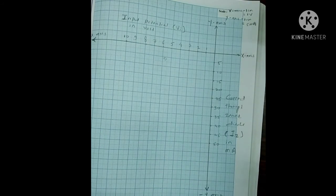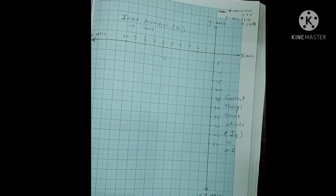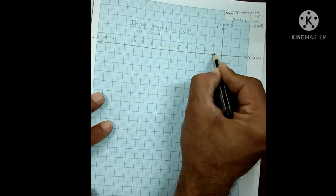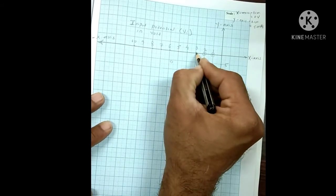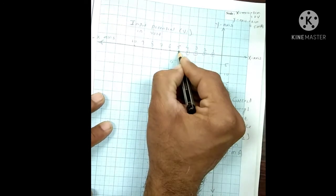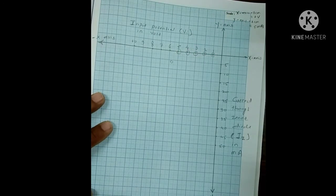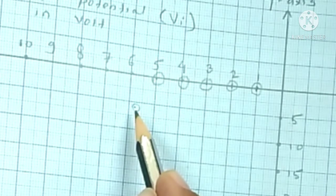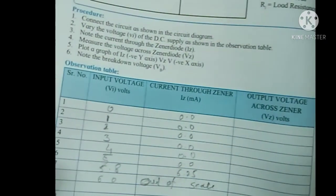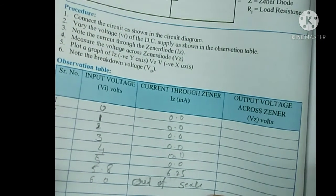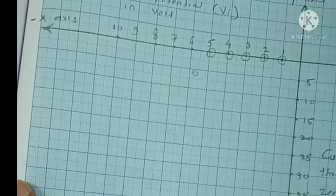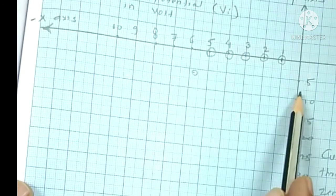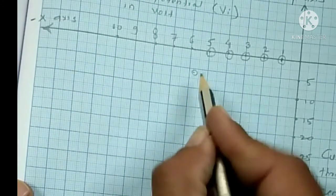Up to five volt input potential, the value of current through the Zener diode is zero. So for one volt, two volt, three volt, four volt, and five volt, current is zero. But for 5.8 volt, the value of current is 6.25 milliampere, so we get that point on the graph. For 6 volt, the current goes out of scale. If we draw the curve for that, we get a characteristic curve of the Zener diode.